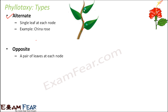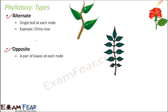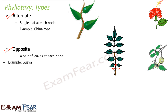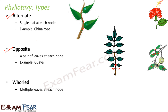The next type is opposite phytotaxy. Here we have a pair of leaves at each node — two leaves just opposite to each other, which is why it is called opposite phytotaxy. If this is the node, we have one leaf here and one leaf here, so two leaves at each node. An example is the guava plant — at each node there are two leaves, so everywhere the leaves occur in pairs.